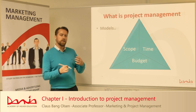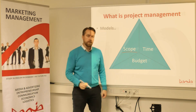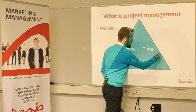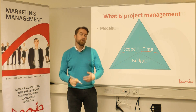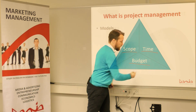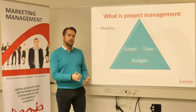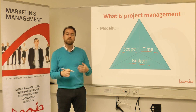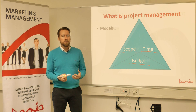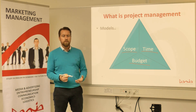Project management contains three aspects: scope, which is what you're supposed to do; time, the timeframe within which you need to do your scope; and lastly, budget — how much resources you have to use for this project. Those three things are what you're going to manage in your project management. There are several project management models, but when we're working with Project Libre here, we're working with the waterfall model.